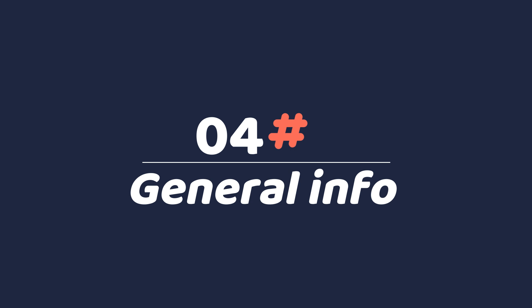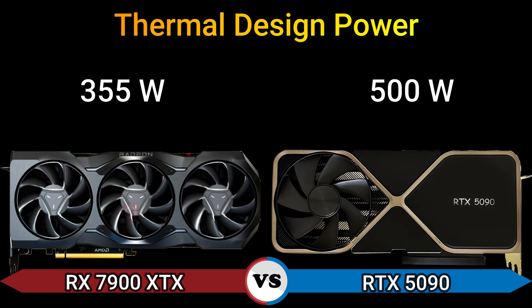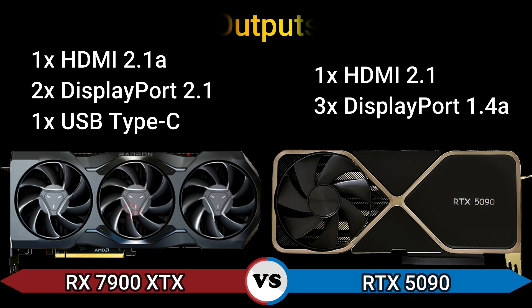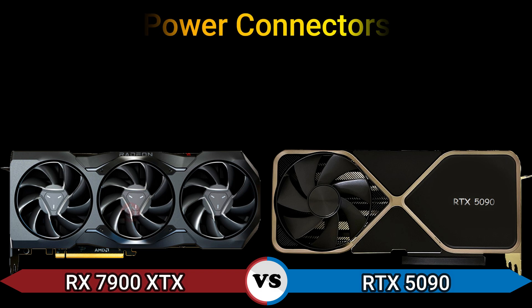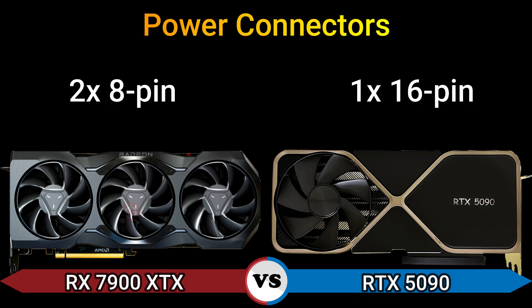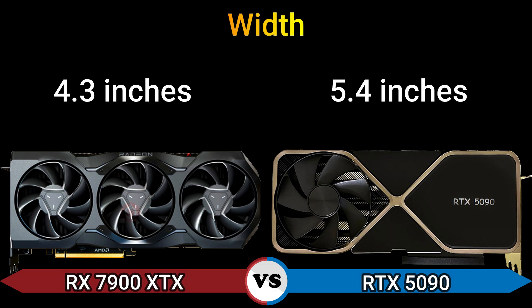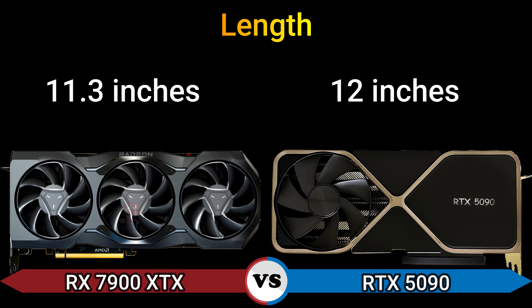Part 4 — General Information. Thermal Design Power: 355W and 500W. Suggested PSU: 750W and 900W. Outputs: 1x HDMI 2.1a, 2x DisplayPort 2.1, 1x USB Type-C and 1x HDMI 2.1, 3x DisplayPort 1.4a. Power connectors: 2x8-pin and 1x16-pin. Height: 2 inch and 2.4 inch. Width: 4.3 inch and 5.4 inch. Length: 11.3 inch and 12 inch.